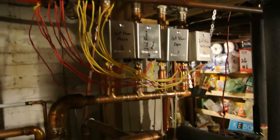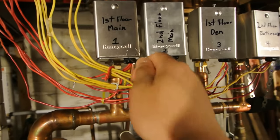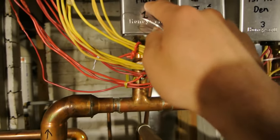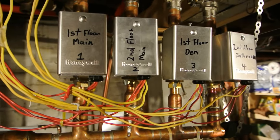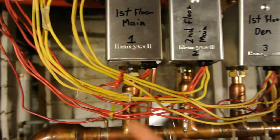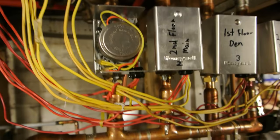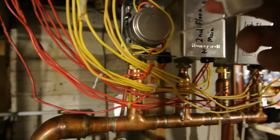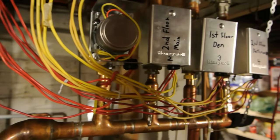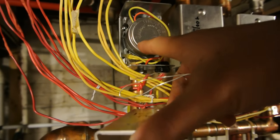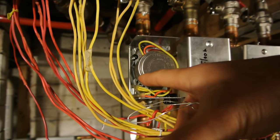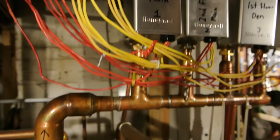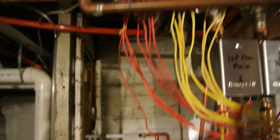These are the zone valves. This one is for the heating loop — there are four zones labeled: main, second floor, den, and bathroom. When you call for heat from the thermostat in any one of the zones, this switch will move over. Inside there's a motor, so this is an electromechanical valve. The motor turns on and opens the valve, letting hot water go through the system. At the end there's an end switch — a little micro switch — and an arm hits it, telling the boiler to turn on.